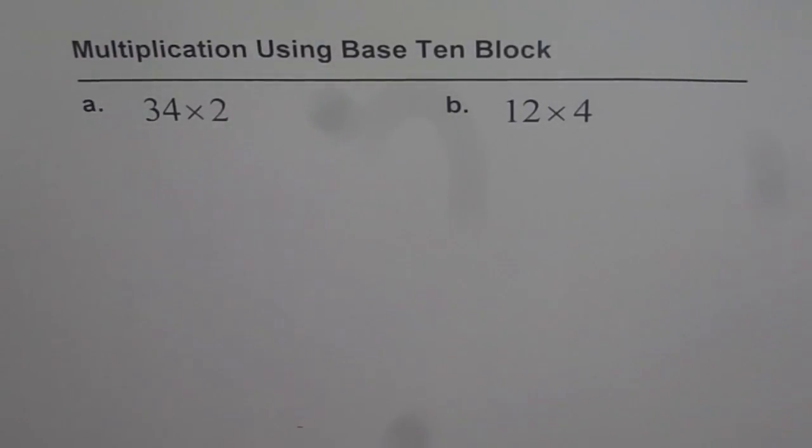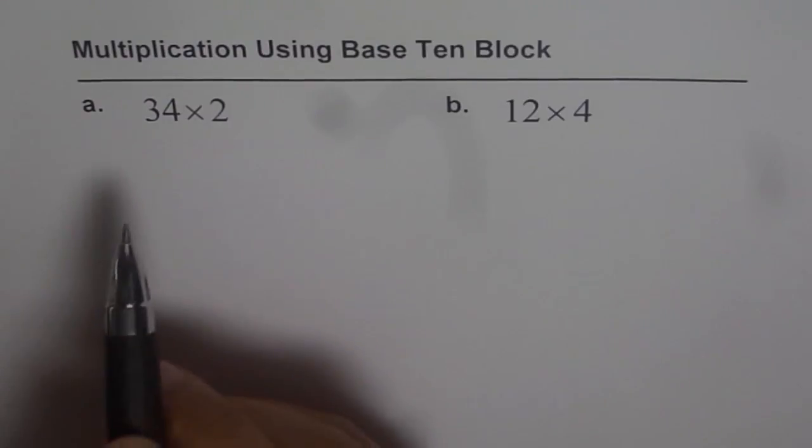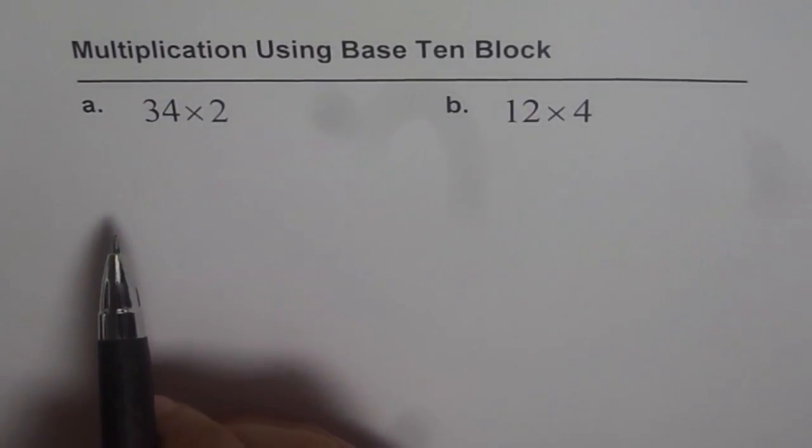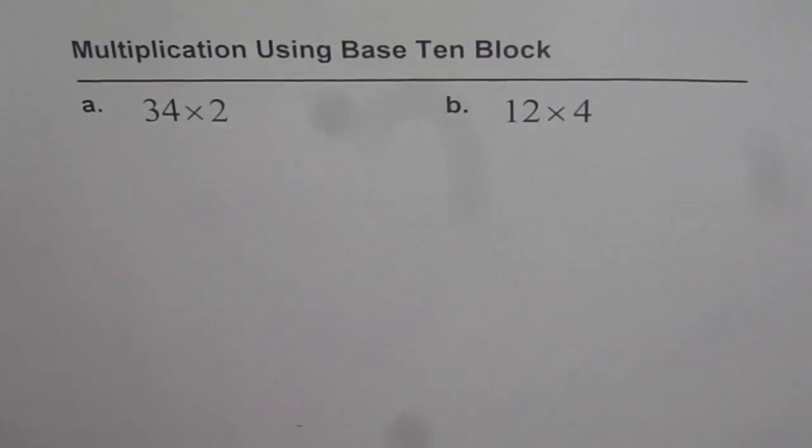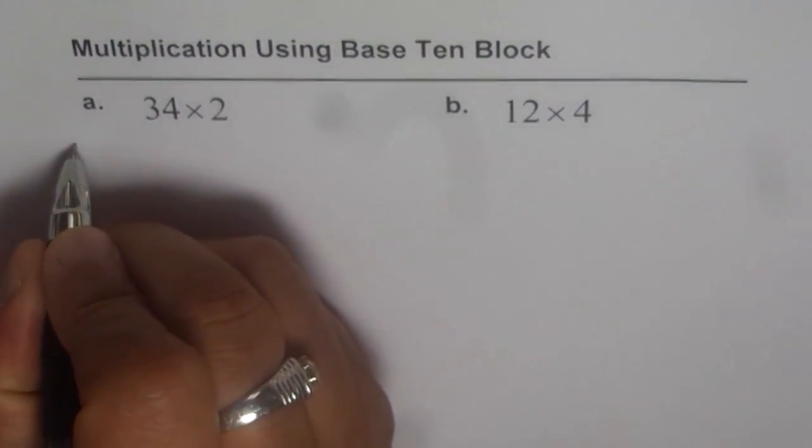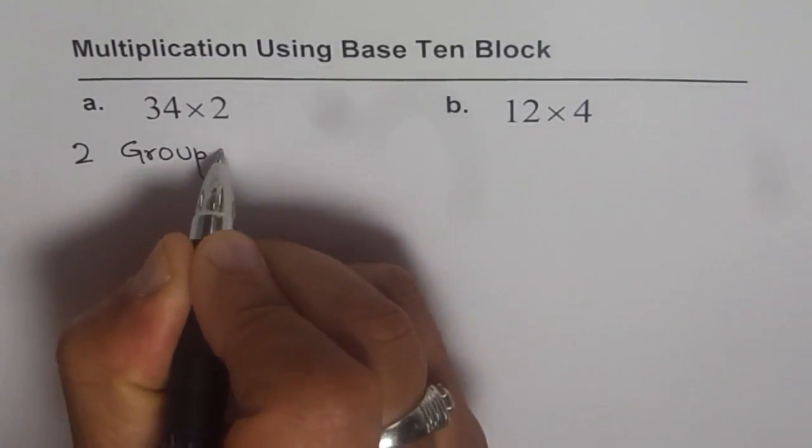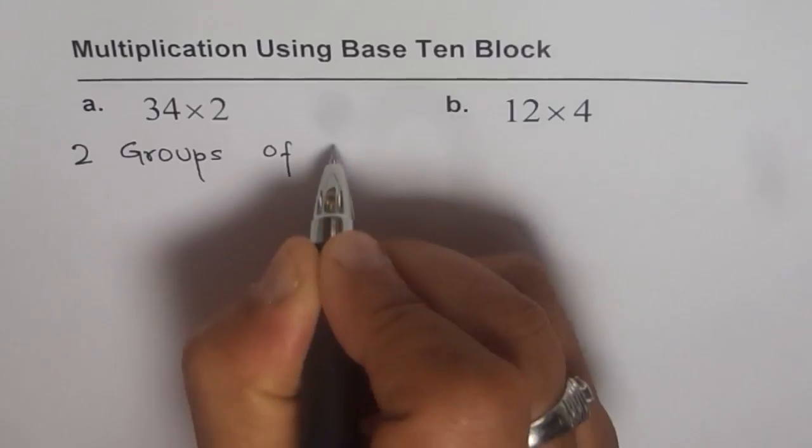We will do both of them one by one using base 10 blocks. Now, when I say 34 times 2, that means we have 2 groups of 34, right? So that means we have 2 groups of 34.